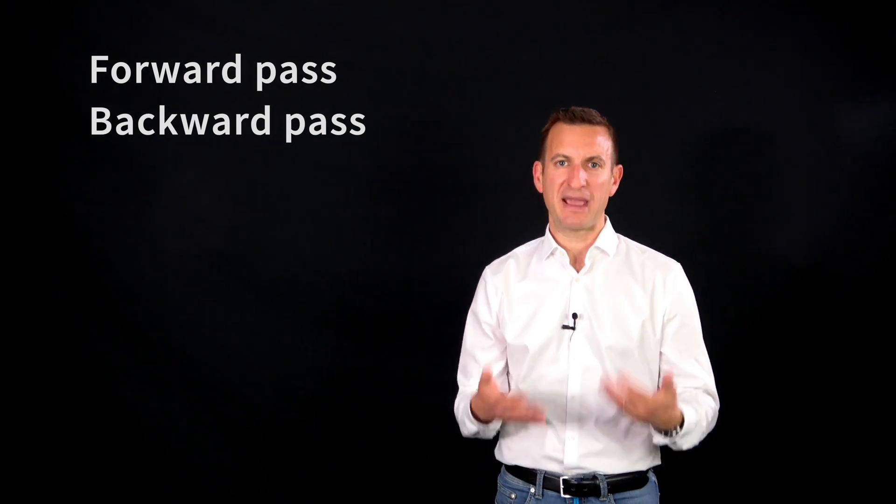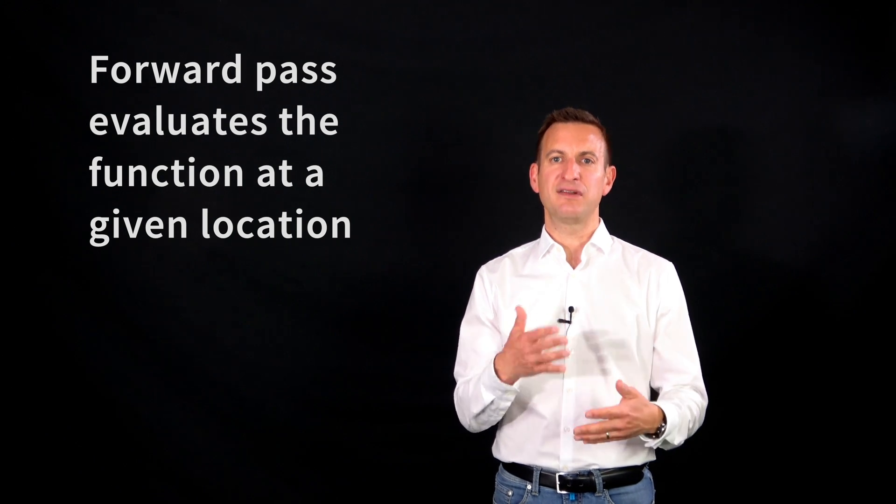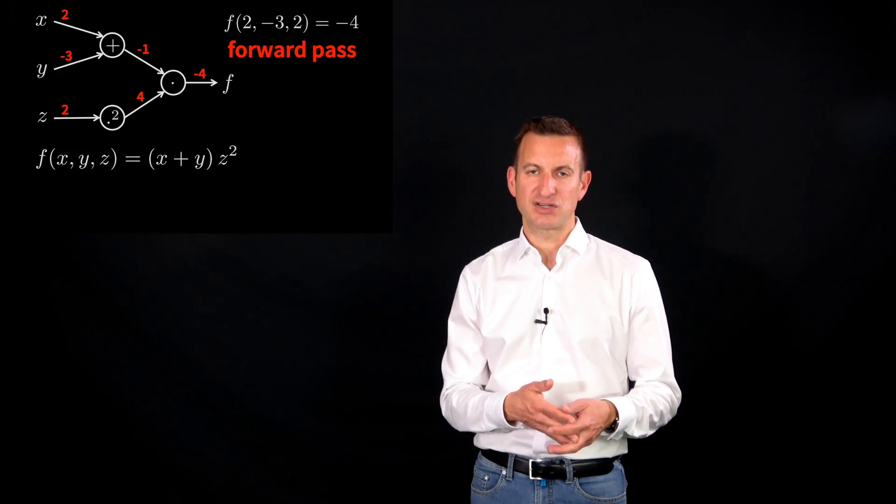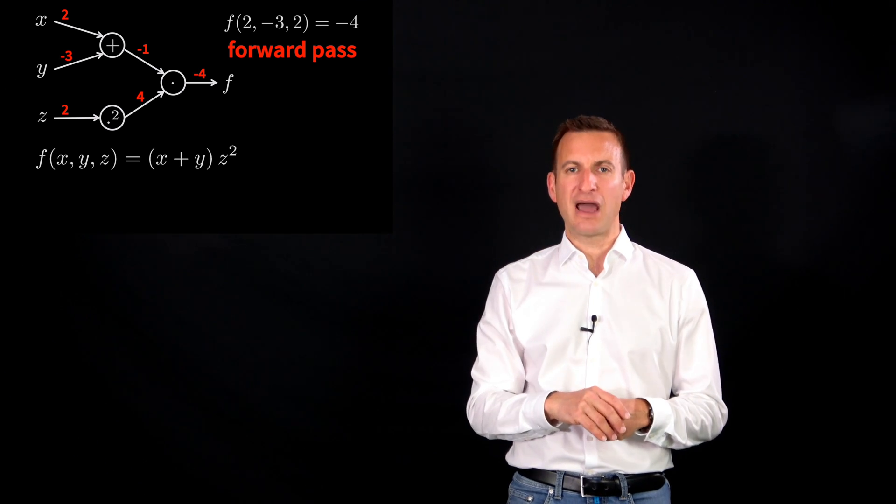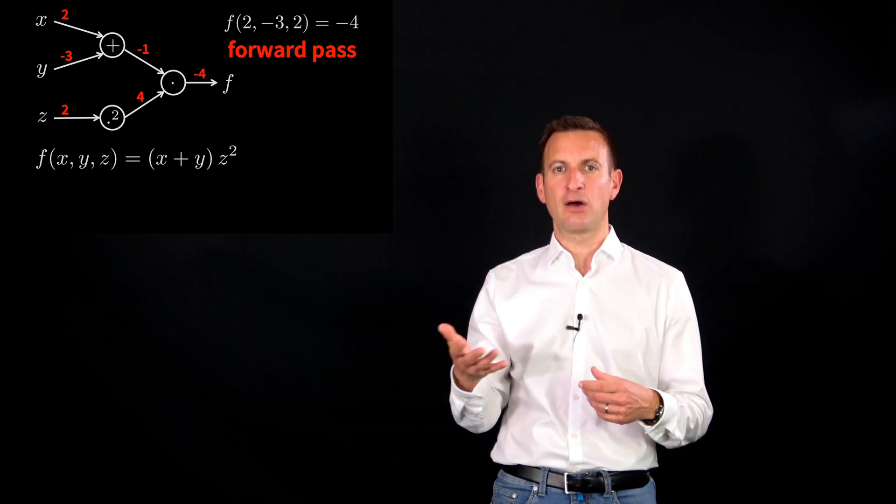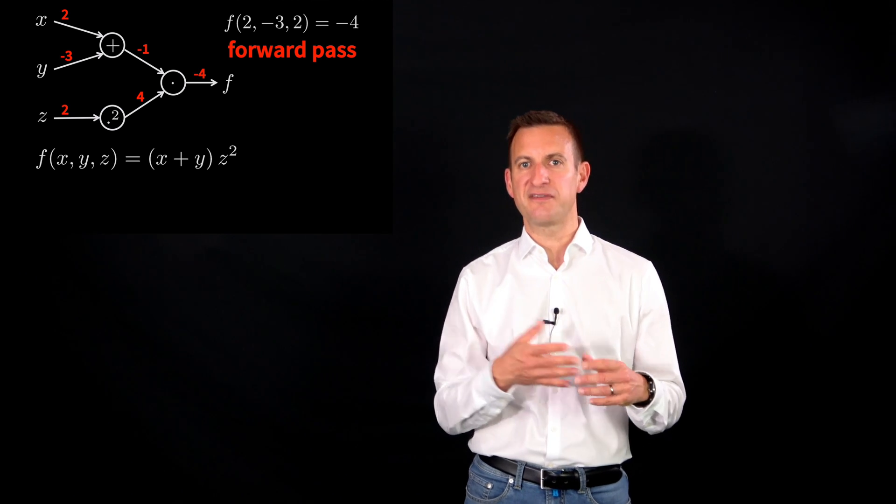So the forward path is used to evaluate the function for a given x, y, z location. We can put in the values over here, propagate this information through the graph, always executing the mathematical operations in the nodes. And then we get out that function value. So that's the forward path.